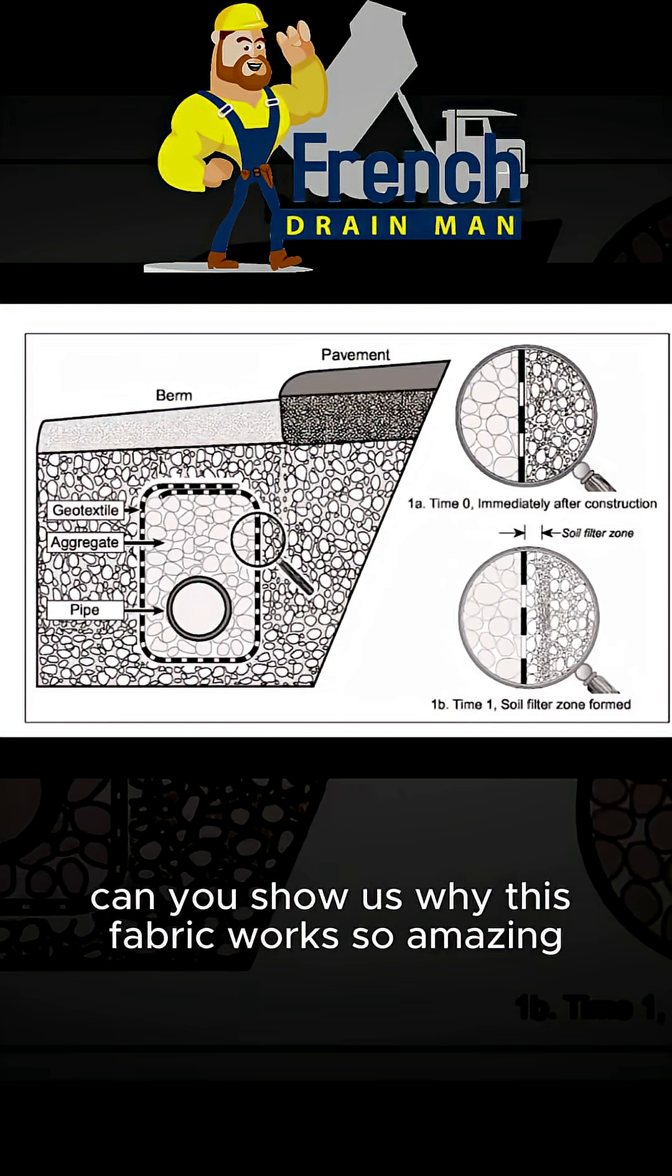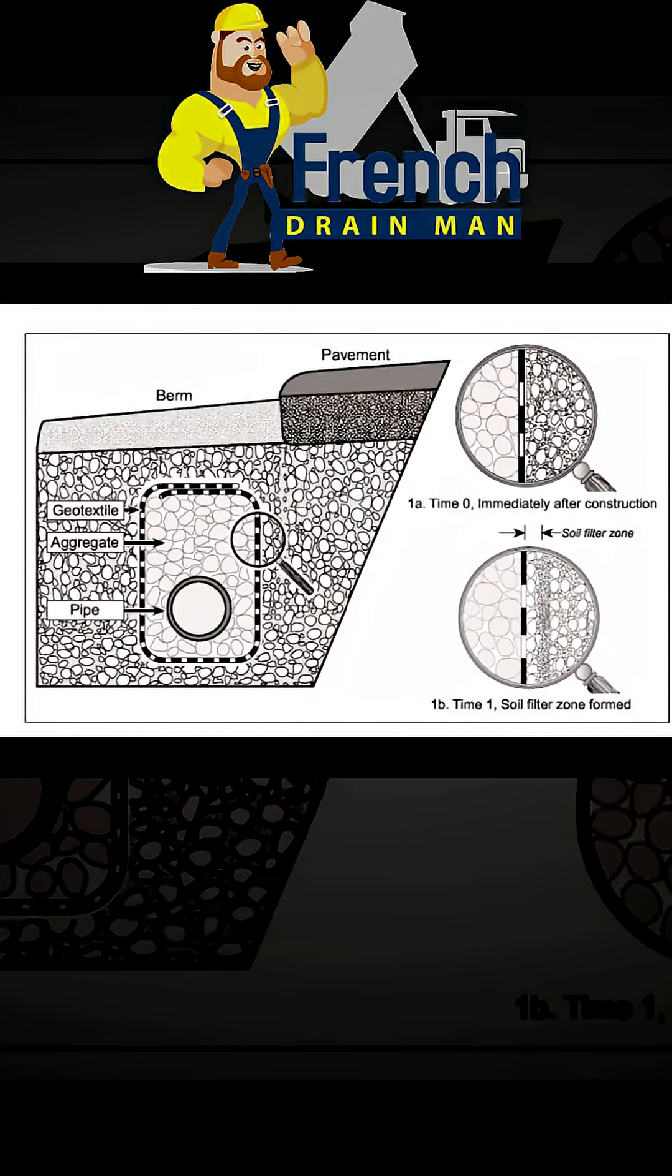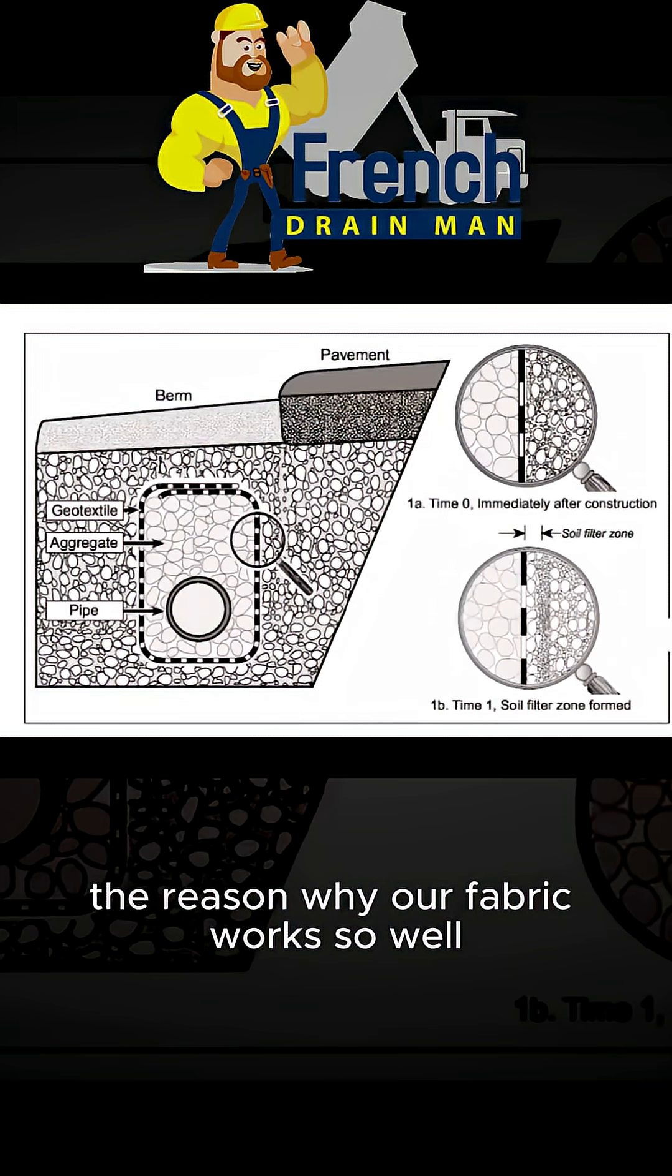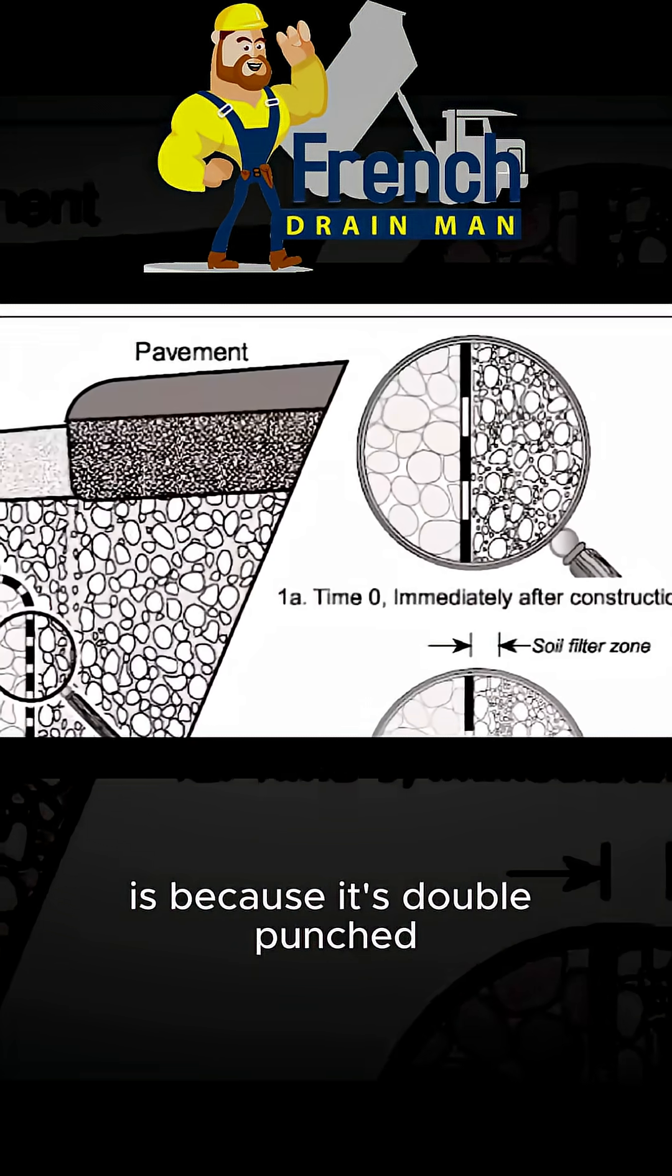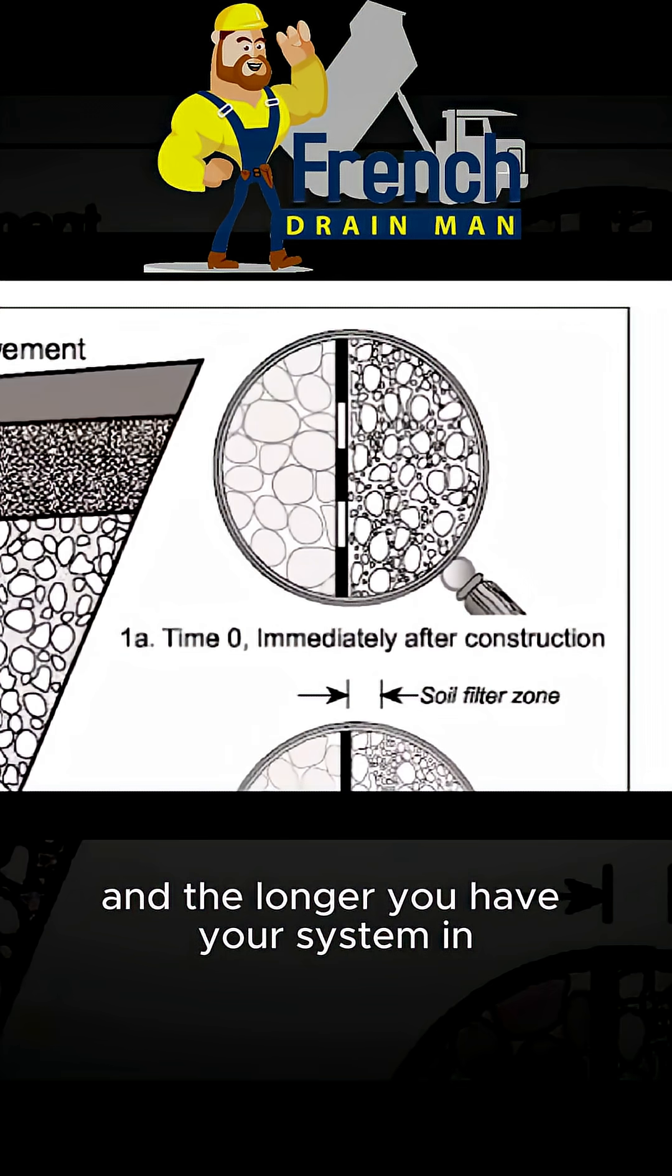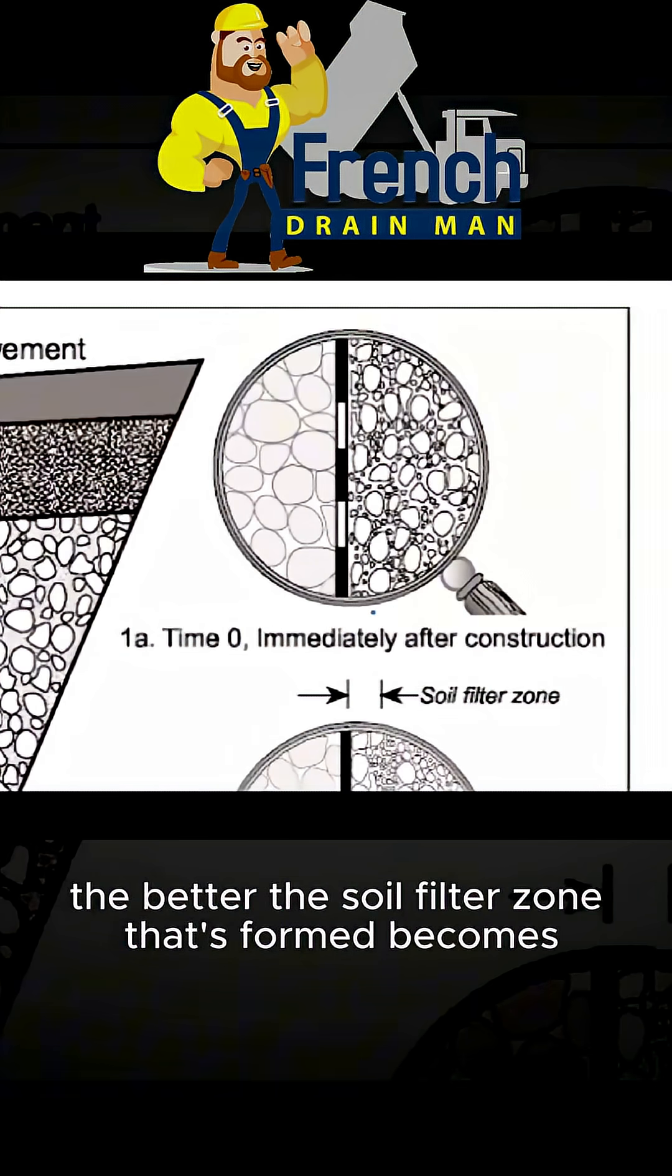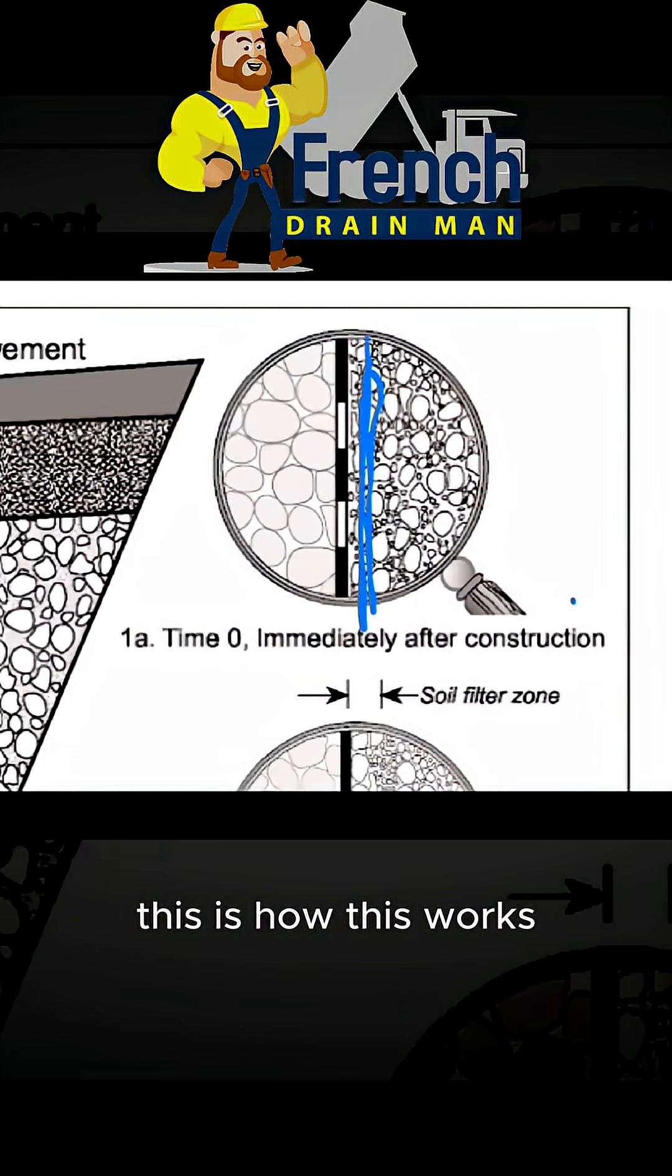Everybody's always asking can you show us why this fabric works so amazing, because everyone that's used it gets the same results. They're fantastic. The reason why our fabric works so well is because it's double punched, and the longer you have your system in, the better the soil filter zone that's formed becomes. This is how this works.